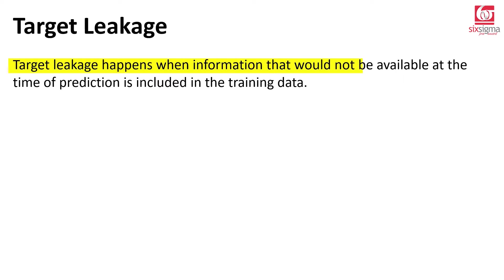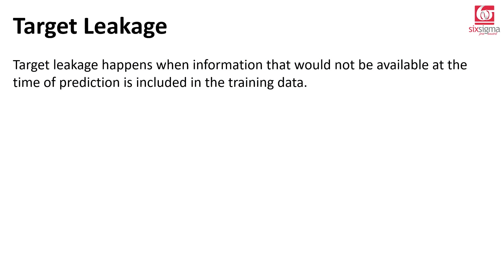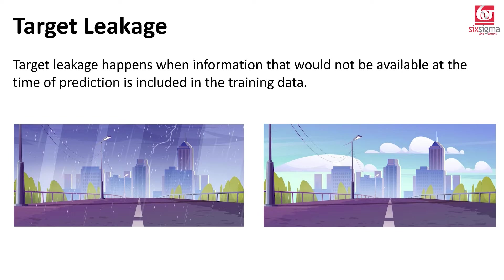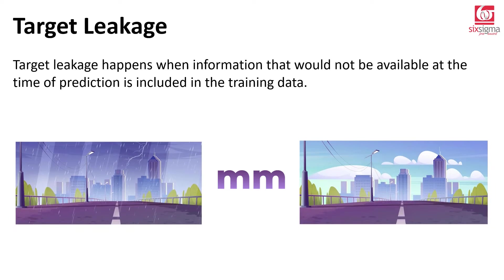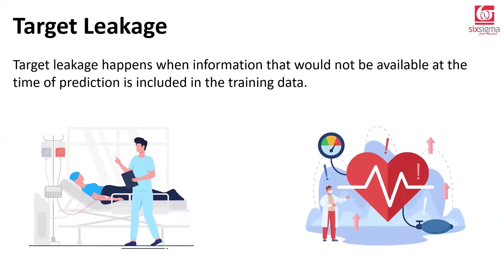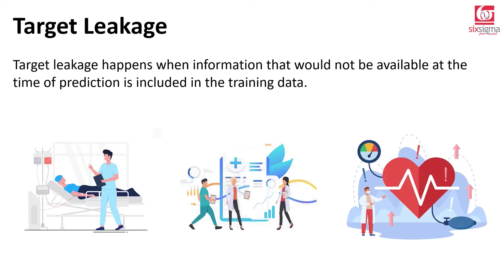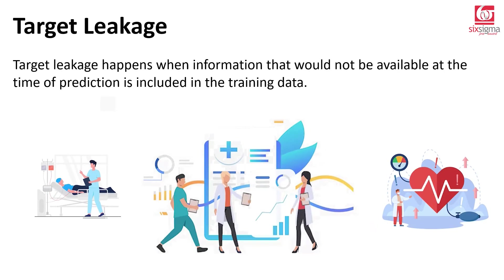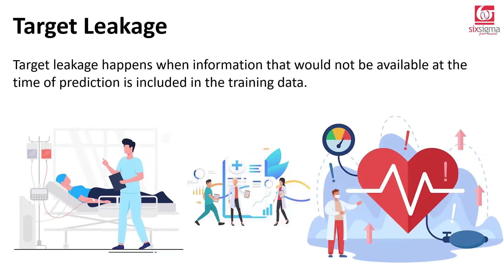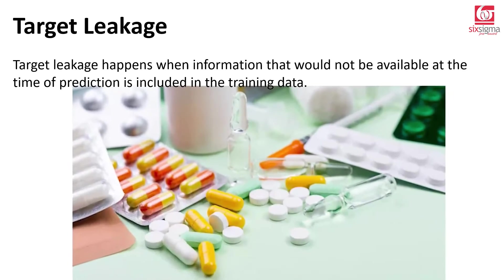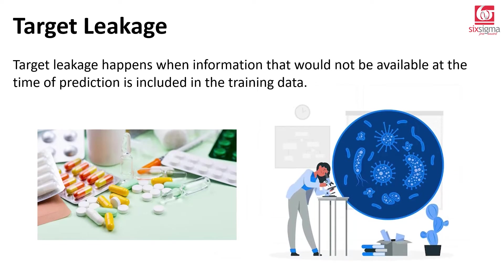Target leakage happens when information that would not be available at the time of prediction is included in the training data. For example, if you're trying to predict whether it's going to rain and you have a feature capturing rain in millimeters — if you already know how much it rained, it doesn't make sense to predict whether it rained. Only if it rained is when you would know how much it rained; it should not be the other way around.